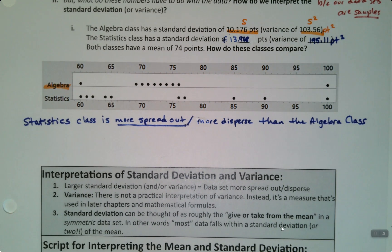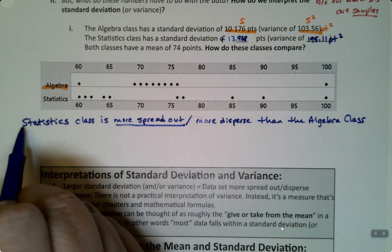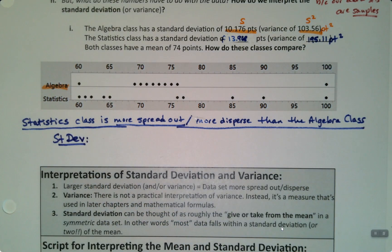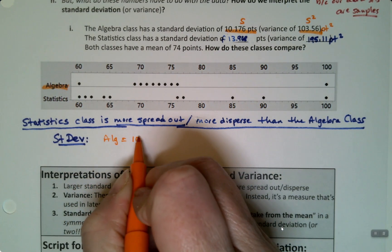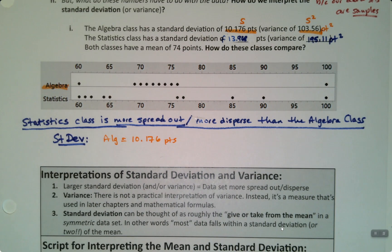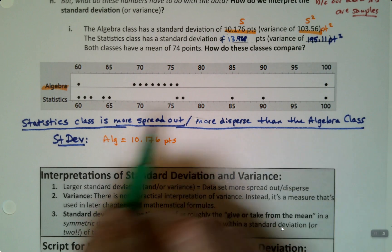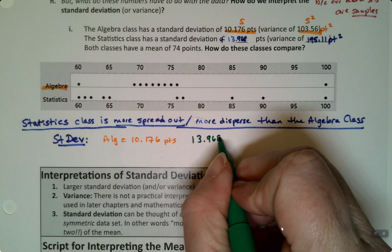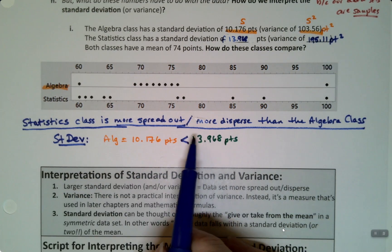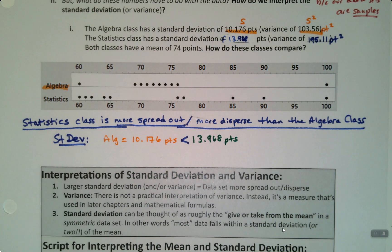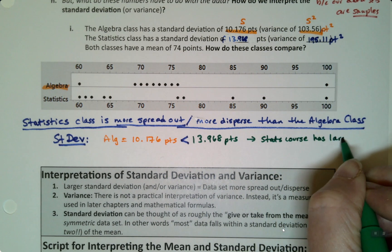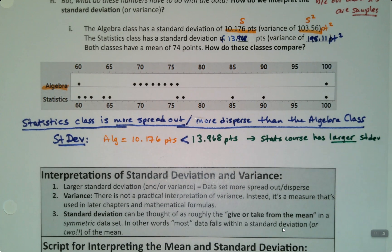Now, how do we know? How do we know it's more spread out? It's more disperse. How can we tell? And the answer is, that's what standard deviation and variance are measuring for us. Look, let's compare standard deviations. So, let's just write this up here. Let's talk about standard deviations. If we look at the standard deviations, the standard deviation for the algebra class was 10.176 points. And the standard deviation for the statistics course was 13.968 points. This is the bigger number, right? The alligator eats the bigger thing. Chomp, chomp, chomp. Right? So, this is larger. It has a larger standard deviation. Right? Statistics course has a larger standard deviation S. Right? Standard deviation.